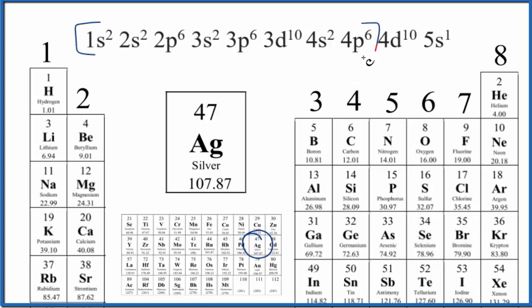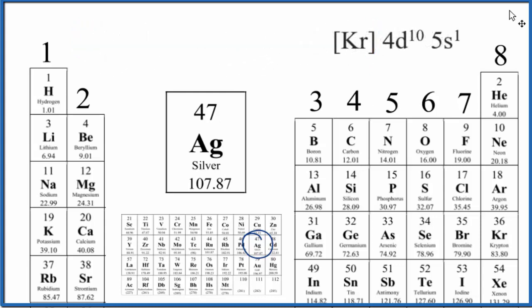Krypton, this is its electron configuration. So we can replace all of this with just Kr. And this is the condensed electron configuration for krypton. Let's move it to the center.